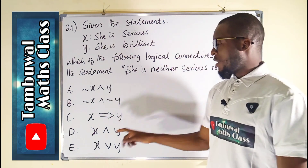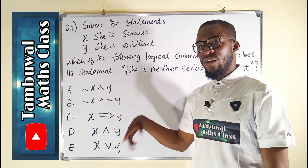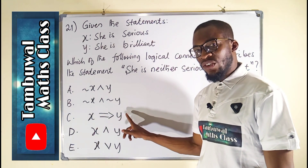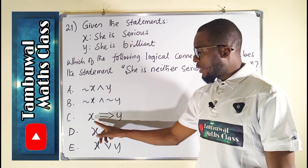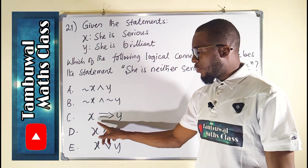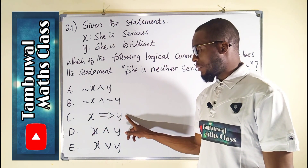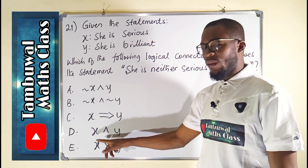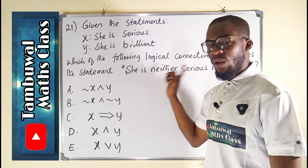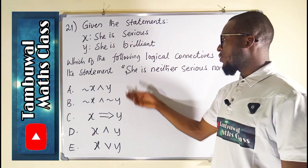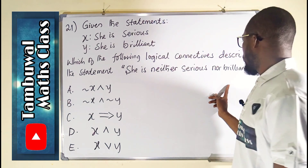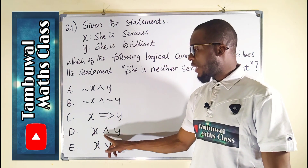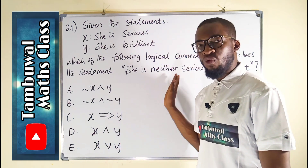Take note of this option. This stands for: given that she is serious and given that she is brilliant — she is serious provided that she is brilliant. This is an AND statement, and though it is a true statement, it is not what we are asked for. We are asked to find 'she is neither serious nor brilliant,' but this reads 'she is serious and she is brilliant.' That's why it is not what we are looking for.